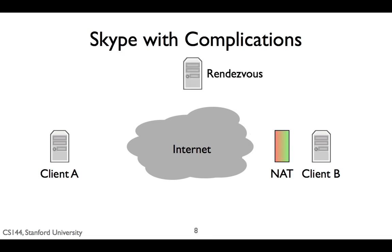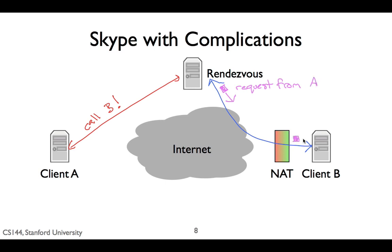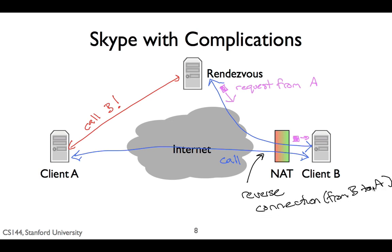Skype works around this using something called a rendezvous server. When you log into Skype, your client opens connections to a network of control servers. Client B opens a connection to the rendezvous server — this works fine because the server isn't behind a NAT. When client A calls client B, it sends a message to the rendezvous server. Since the server has an open connection to client B, it tells B there's a call request from A. A call dialog pops up on client B, and if client B accepts the call, it opens a connection to client A. This is called a reverse connection — client A was trying to connect to client B, but instead sends a message to a computer that client B is already connected to, which then asks client B to open a connection back to client A.